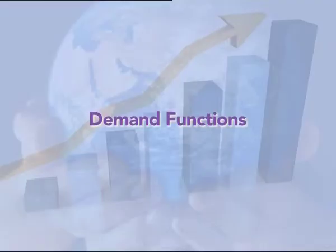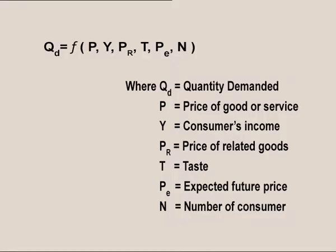Demand Functions. Generalized demand functions. The relation between quantity demanded and the above-mentioned six affecting factors is referred to as the generalized demand function. It shows how all six variables jointly determine the quantity demanded. In order to discuss the individual effect of any one of the six variables on quantity demanded, we can change just that variable and explain its influence on demand, keeping all other factors constant.